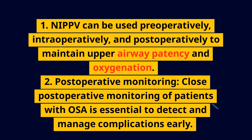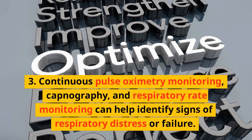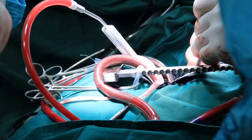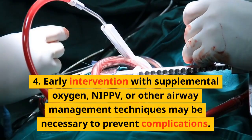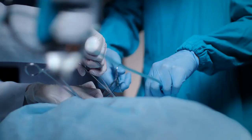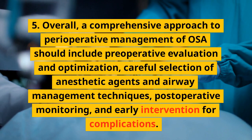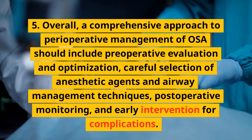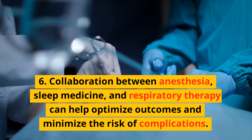Postoperative monitoring and comprehensive management. Close postoperative monitoring of patients with OSA is essential to detect and manage complications early. Continuous pulse oximetry monitoring, capnography, and respiratory rate monitoring can help identify signs of respiratory distress or failure. Early intervention with supplemental oxygen, NIPPV, or other airway management techniques may be necessary to prevent complications. Overall, a comprehensive approach to perioperative management of OSA should include preoperative evaluation and optimization, careful selection of anesthetic agents and airway management techniques, postoperative monitoring, and early intervention for complications. Collaboration between anesthesia, sleep medicine, and respiratory therapy can help optimize outcomes and minimize the risk of complications.